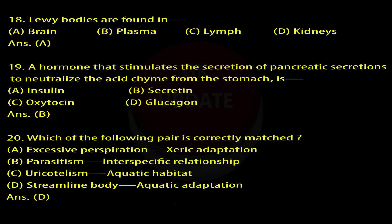Question 20: Which of the following pair is correctly matched? A. Excessive perspiration — xeric adaptation. B. Parasitism — interspecific relationship. C. Uricotelism — aquatic habitat. D. Streamline body — aquatic adaptation. Answer: D.